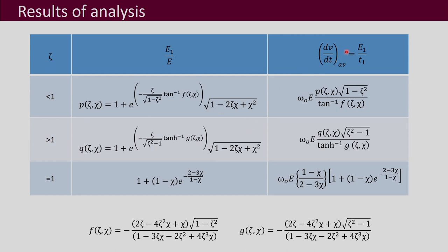We also obtained the average dv/dt, equal to E1 divided by T1 — that is, the rate of rise to the peak voltage E1, since E1 is attained at time T1. This can be written using function p, multiplied by the square root of 1 minus zeta squared, divided by the arctangent of function f, then multiplied by the natural frequency and blocking voltage E.